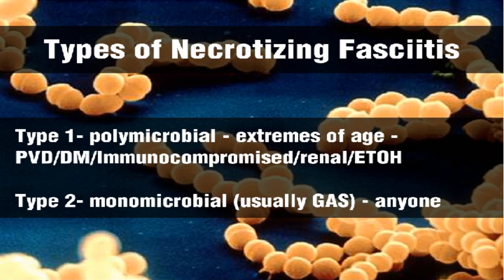There are two types of necrotizing fasciitis. Type 1 is generally polymicrobial — a lot of different organisms are involved — and you usually see these at the extremes of age: elderly individuals and neonates. The most common cause in neonates is omphalitis, infection from the umbilical stump. With older folks, there's usually some combination of comorbidities, whether it be peripheral vascular disease, diabetes, immunosuppression, renal disease, chronic alcohol use, or even chronic infection — chronic cellulitis of any part of the body can potentially develop into this.